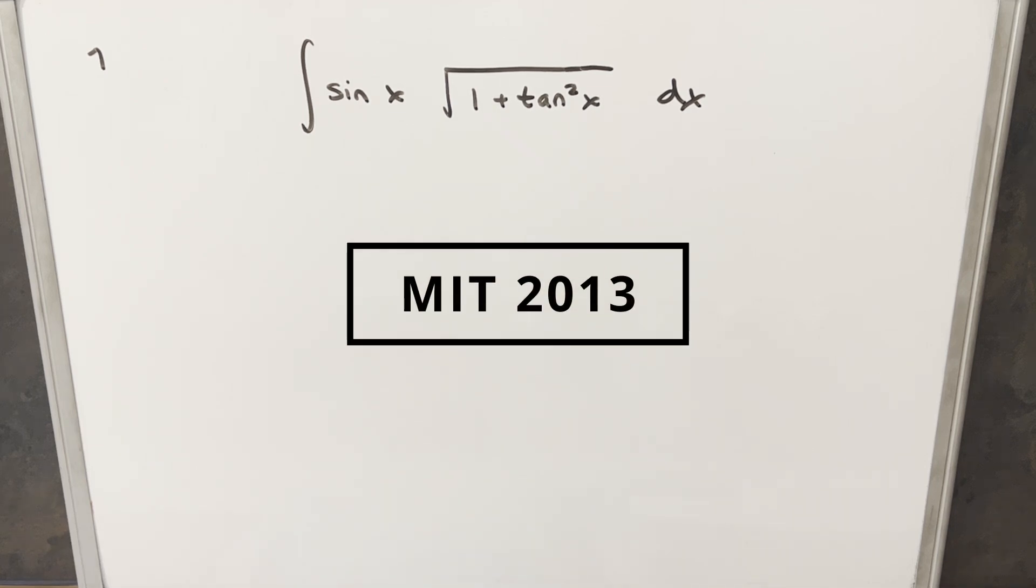We have here another interesting integral. This one's from MIT 2013, problem 7. We have the integral of sine x times the square root of 1 plus tan squared x dx.